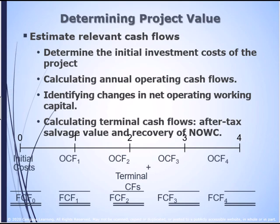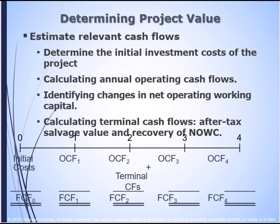We need to estimate the initial investment costs of the project, look at the annual operating cash flows, and talk about net operating working capital. We also need to determine the cash flows at the end of the project attributable to the actual purchase of the assets. We'll end up with a timeline with the initial costs — free cash flow at zero, a cash flow for each year of the project's life, and in the last year two cash flows: one from operations (OCF) and one from terminal cash flows.